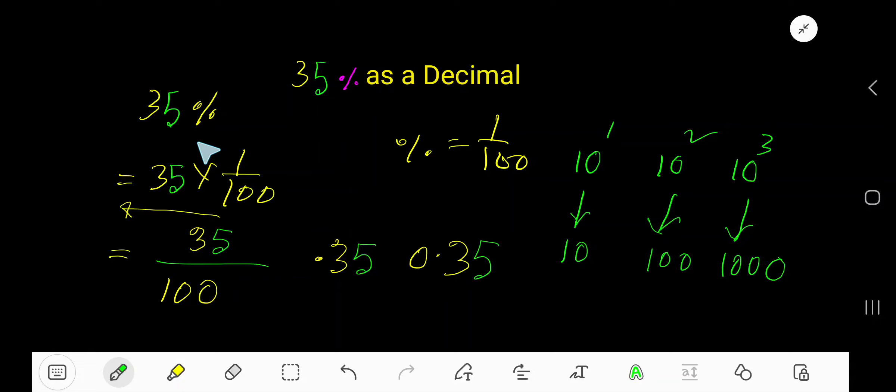35% as a decimal. We can rewrite 35% as 35 times 1 over 100. Percent means 1 over 100. Now multiply the top number: 35 times 1, 35 divided by 100. Look: 10, 100, 1000—these are called powers of 10. So count the number of zeros here. Number of zeros is 2, so the decimal point will move from right to left two digits.